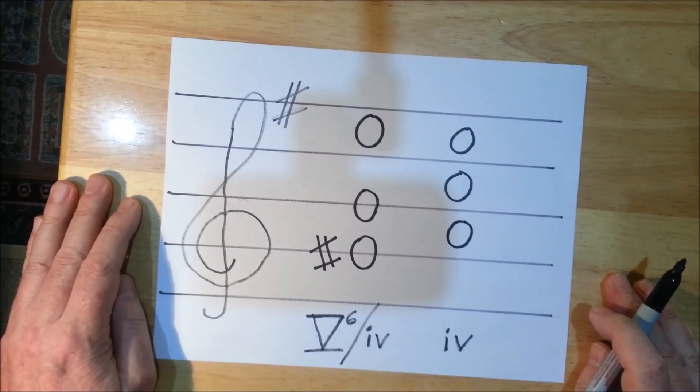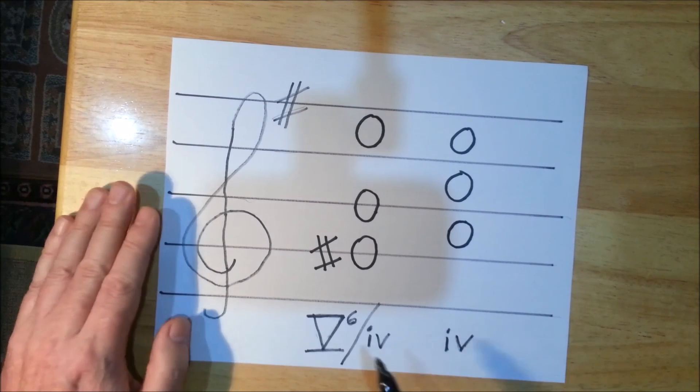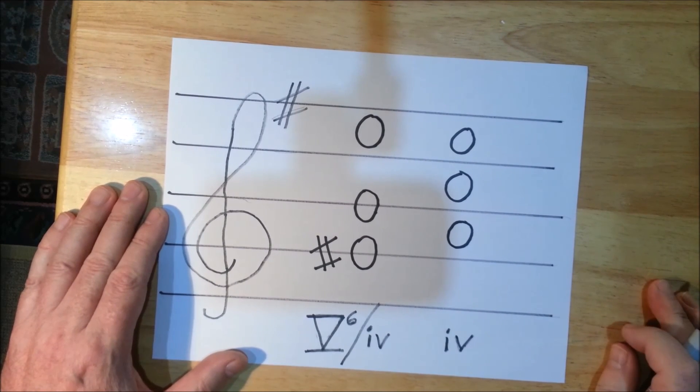There you have it. There's the secondary dominant. This is the V6 of the four chord followed by the four chord in the key of E minor. I hope that helps.